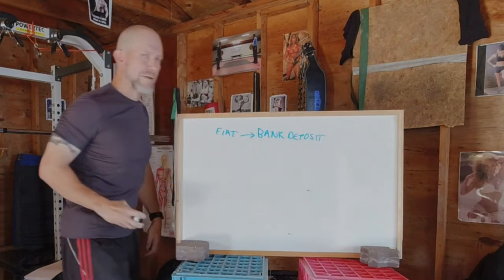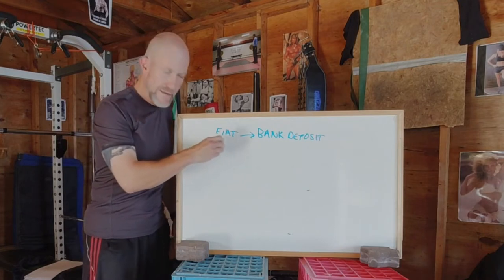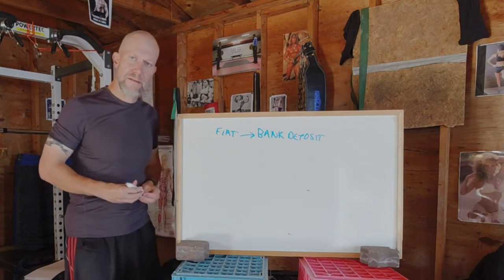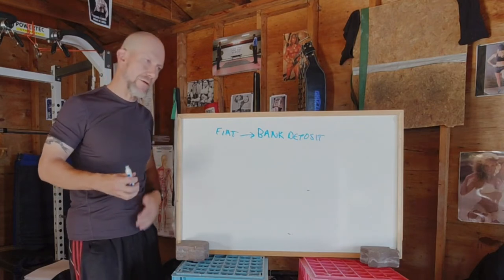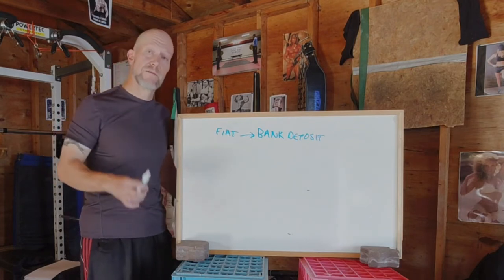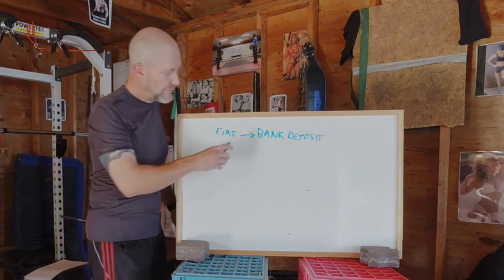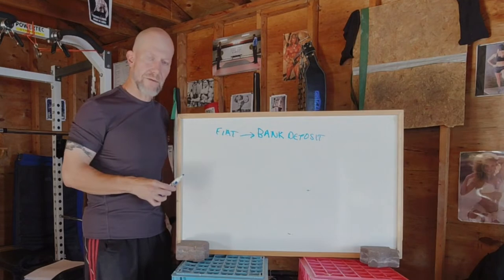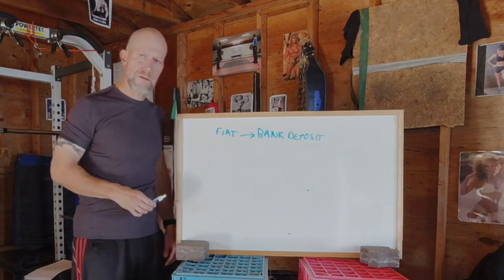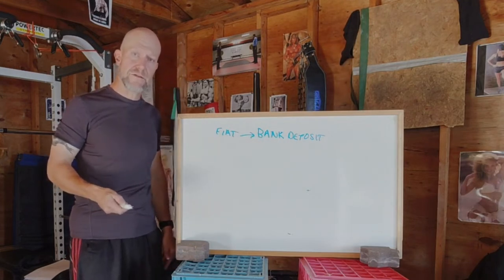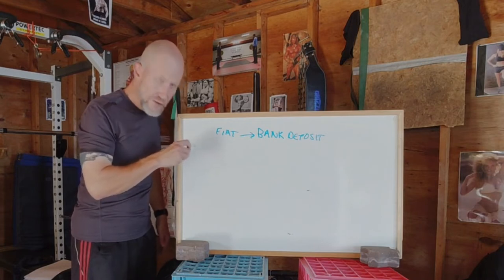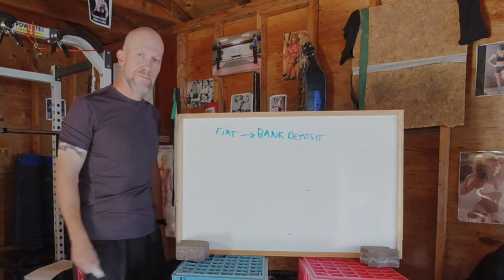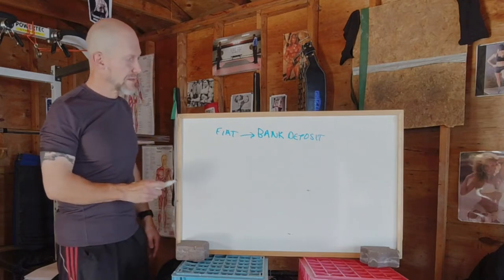What you should realize is that they take this fiat currency along with a bunch of other stuff, and a whole lot of magic happens — they make investments, give out loans, and all kinds of things. What you should understand is that your bank deposit is completely separated from the physical cash. This bank deposit is just numbers on their ledger — it means nothing more than that.